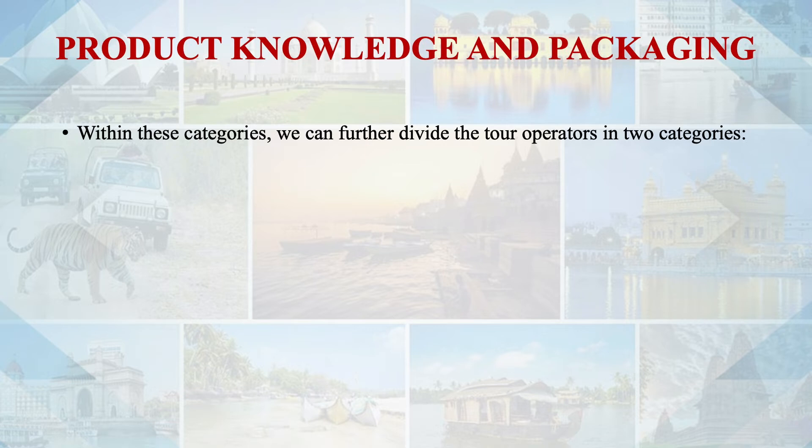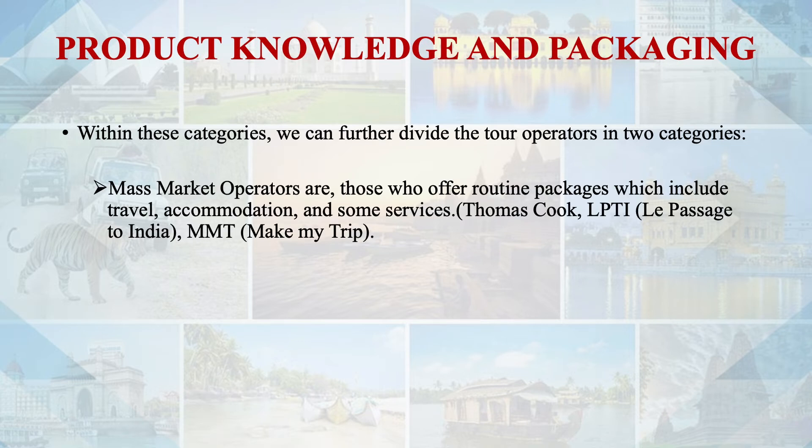Before explaining product knowledge and packaging, let me explain the types of tour operators. Within these categories, tour operators can be divided into mass market operators and specialist operators. Mass market operators are those who offer routine packages including travel, accommodation, and some services — examples include Thomas Cook, LPTI, and Make My Trip. These companies sell very regular brochure products — combinations of travel components — covering commercialized destinations like Europe and USA.